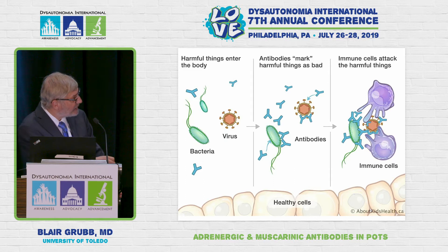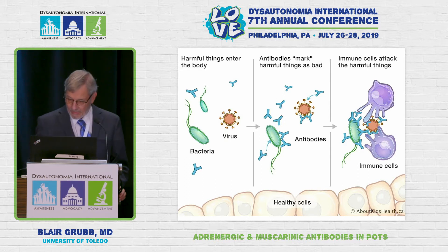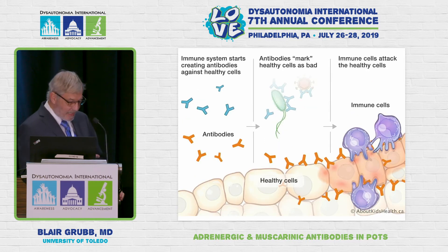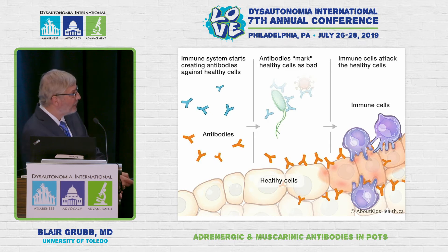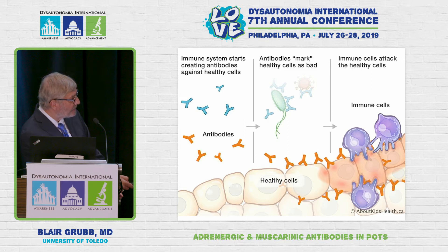There are two kinds: B cells, which are derived from the bone marrow, and T cells, which are derived from the thymus. That's the normal model. But the problem is sometimes the antibodies can start binding to your own cells, or to places they shouldn't bind to. And then your own immune system will find those and start attacking whatever it's bound to.